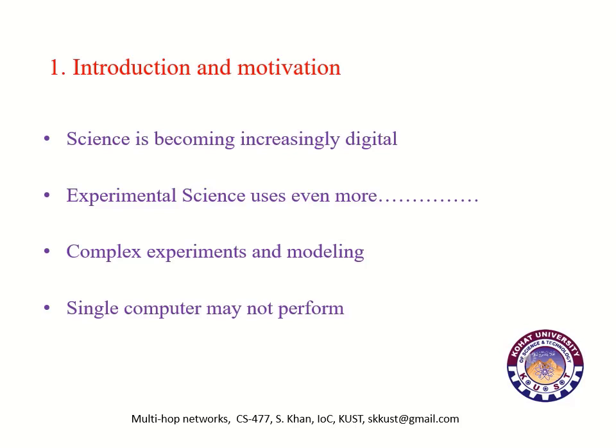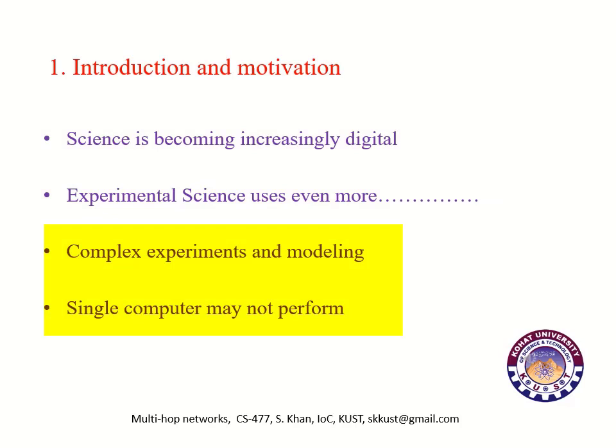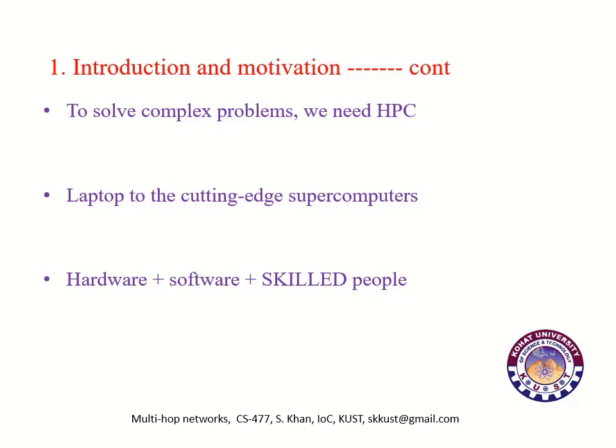Introduction and Motivation: Science is becoming increasingly digital and needs to deal with increasing amounts of data and computational power. Experimental science uses even more sophisticated software and hardware to make precise calculations and mathematical modeling. Complex experiments and modeling require huge computational processing and memory. A single computer may not perform such heavy tasks, or may take a longer period of time. To solve complex problems we need high performance computing, where performance is everything.